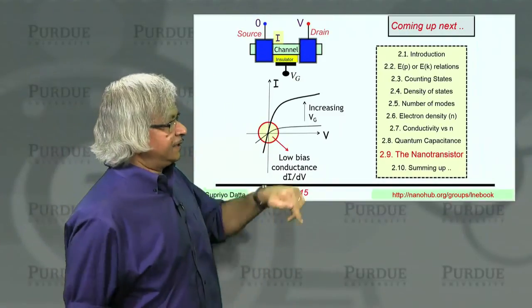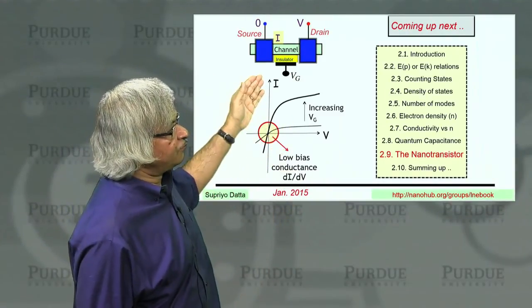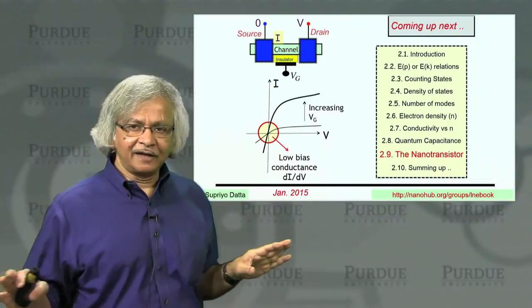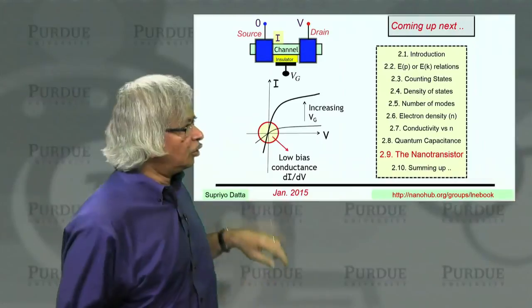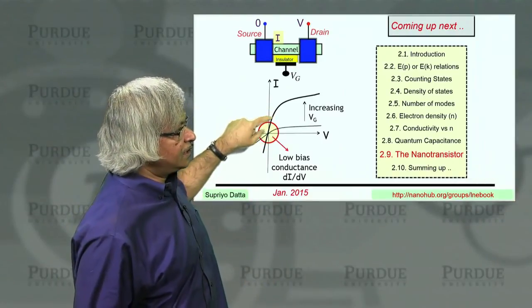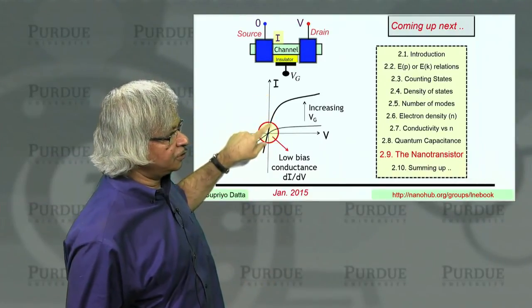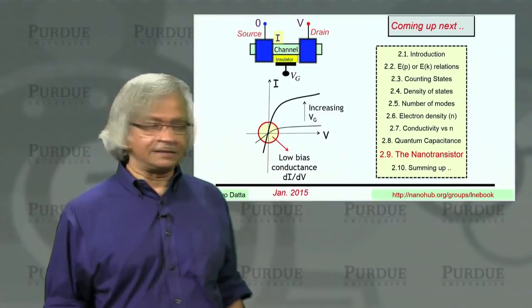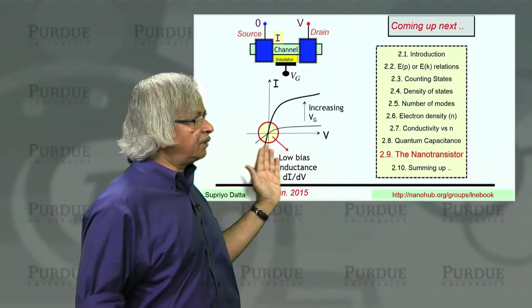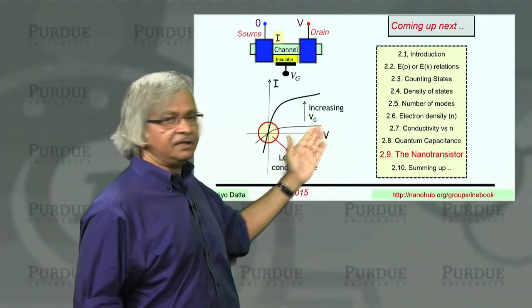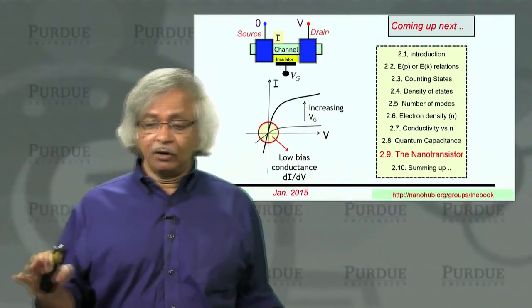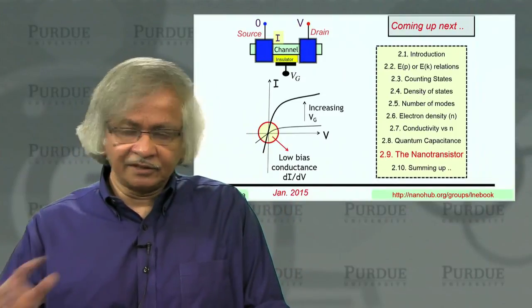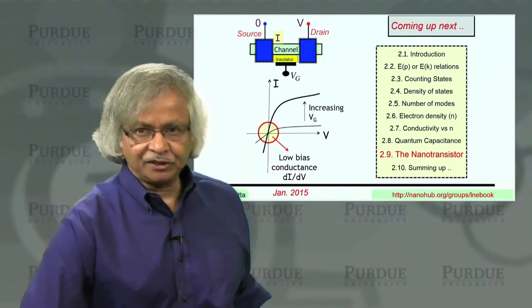In the next lecture, we'll talk about the full current-voltage characteristic. So far, everything we have talked about is low bias — looking right around the origin of an I versus V curve and examining the slope, which is the low bias conductance. What we'll now talk about is the shape of the full IV curve, which is a very important factor in the design of a transistor. Thank you.